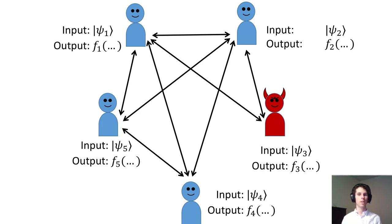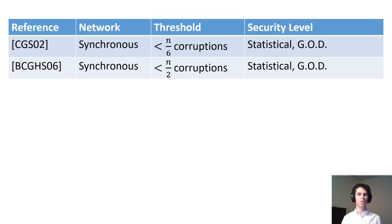For example, they might decide not to send certain messages. There's been quite a bit of work on designing secure multiparty quantum computation. The first work in this area achieves statistical security and guaranteed output delivery as long as less than one-sixth of the parties are corrupted.